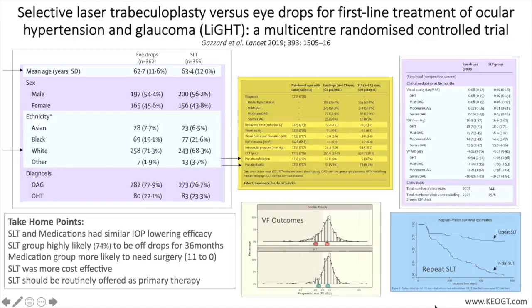There are two follow-up studies worth mentioning from the LIGHT study. The first, by Wright and colleagues, looked at visual field progression differences between the two groups and found, using total deviation values, that 1 in 4 eyes in the medication group showed moderate or fast visual field progression, whereas in the SLT group this value was approximately 1 in 6. The authors concluded that with slower visual field deterioration, SLT may delay or completely avert the need for more intense medical and surgical intervention in a significant proportion of patients.